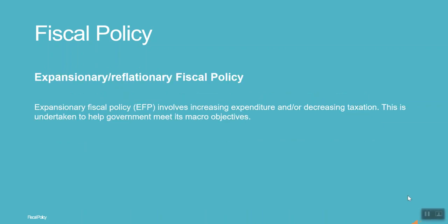Expansionary fiscal policy involves increasing expenditure and/or decreasing taxation. This is undertaken to help the government meet its macro objectives of increasing economic growth, lowering unemployment and inflation, and improving its balance of payments.